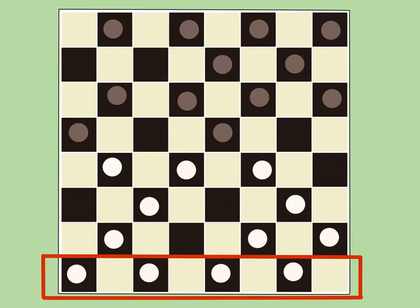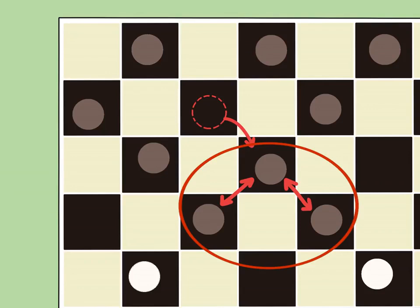Remember that you won't be able to keep your back row intact forever. Once you're low on pieces or you see an opportunity for an advantageous trade, don't hesitate to move out.